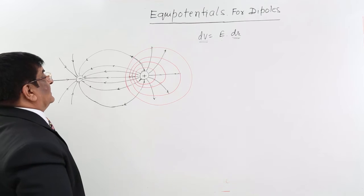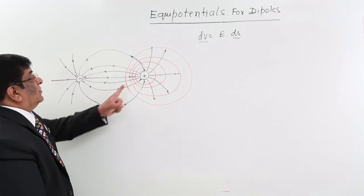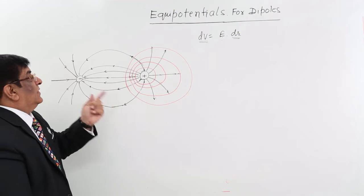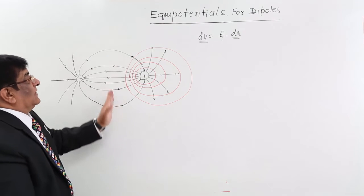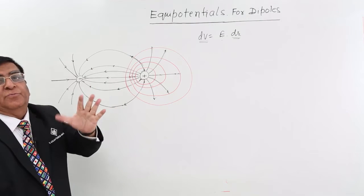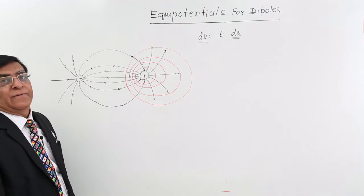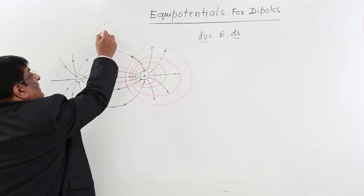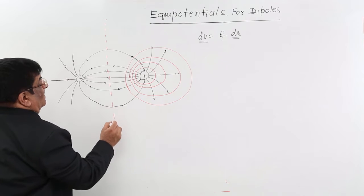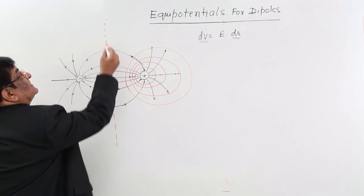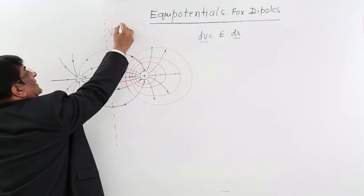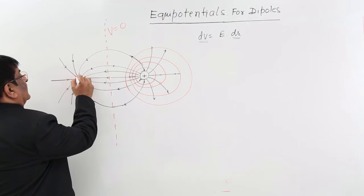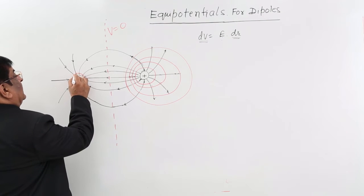So the equipotential will be like this. Now we know that for plus and minus charges, at the centre the potential is zero. If the potential is zero on the equatorial line, we will find an equipotential there — an equipotential like this — and this equipotential has how much potential? Zero.